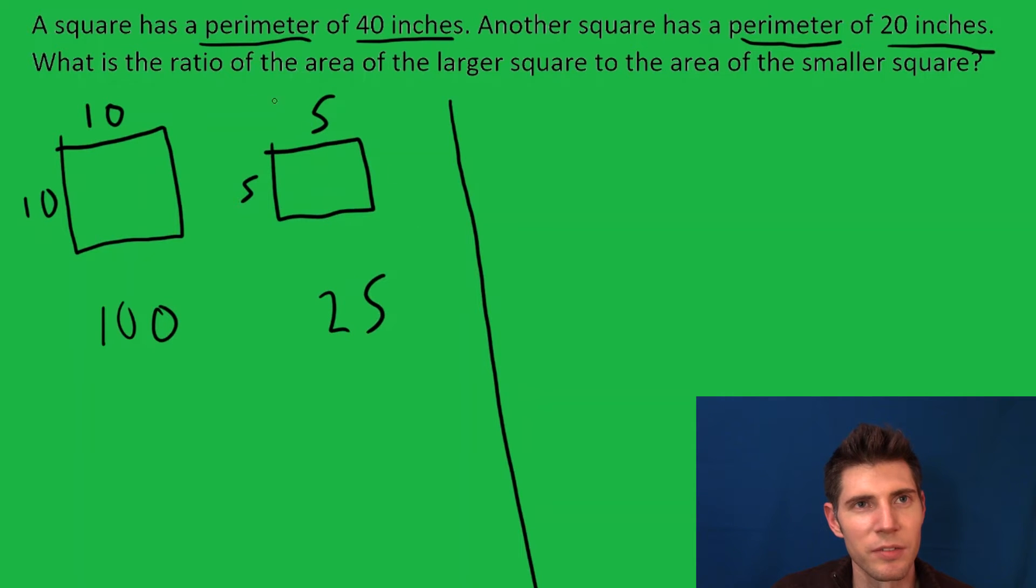So that's 100 over 25, which becomes 4. It really wasn't that hard. That's a good way to do it—just draw the actual squares. The other thing you can do is use ratios.